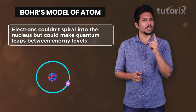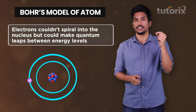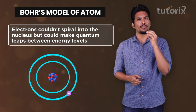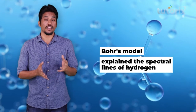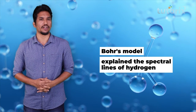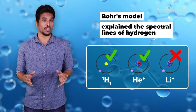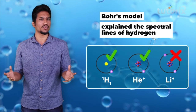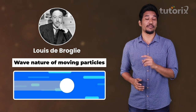Bohr's model successfully explained the hydrogen spectra — that is, the absorption and emission spectra of an atom with a single electron. However, his model couldn't extend that behavior to other atoms which had more than one electron. Later, Louis de Broglie proposed the wave nature of moving particles.